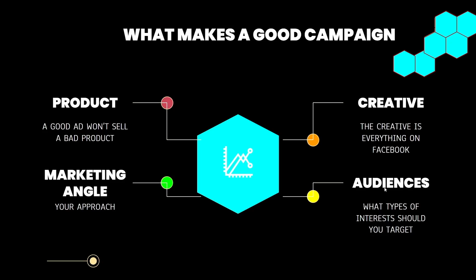The next thing is the audience — what types of interests should you target? The audience and creative are heavily involved with each other. If your creative says 'say goodbye to acne' but the audience is people who struggle with blackheads, you're missing out. The creative has to match the audience. If you're selling a neck pain product, you should not target arm pain as the audience — you should have neck pain in both the video and the audience. This is where most people go wrong: they have a good creative but the audience doesn't relate to it.